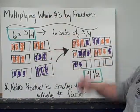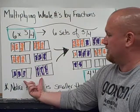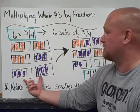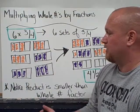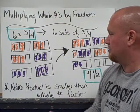That can be read as six sets of three-fourths. So what I have right here is I literally have six sets of three-fourths. Three of them are colored in orange, three of them are colored in purple.